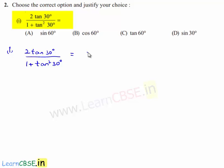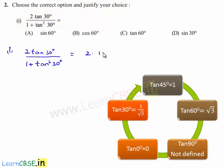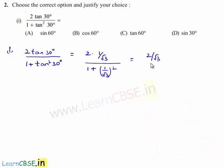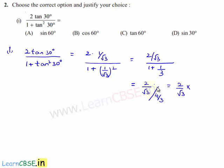This will be equal to 2 times tan 30, whose value is 1 by root 3, divided by 1 plus tan square 30, that is 1 by root 3 whole square. This equals 2 by root 3 divided by 1 plus 1 by 3, which is 4 by 3. So this becomes 2 by root 3 multiplied by 3 by 4, and root 3 cancels, giving root 3 by 2.